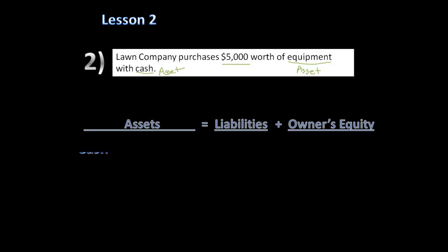Under assets, cash is decreased by $5,000 because we paid cash for the equipment. Then equipment is added under assets and increased by $5,000, since our company now has $5,000 worth of equipment.